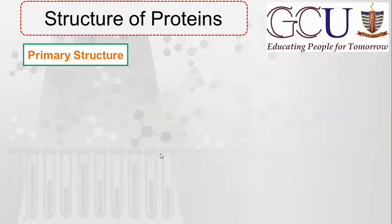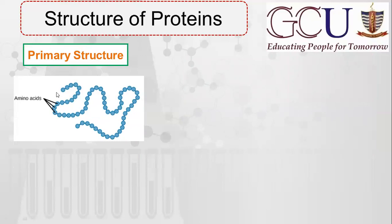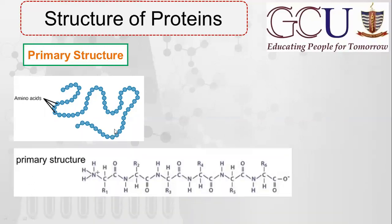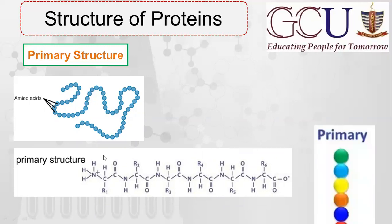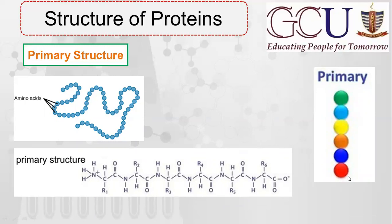Dear students, this is the primary structure of protein. All amino acids are connected to each other in a linear fashion. The only interaction present is the peptide bond; there is no other interaction. As you can see in this example, they are joined via peptide bonds, and there is no force of attraction of any other kind. You can also see this represented with amino acids shown in different colors.